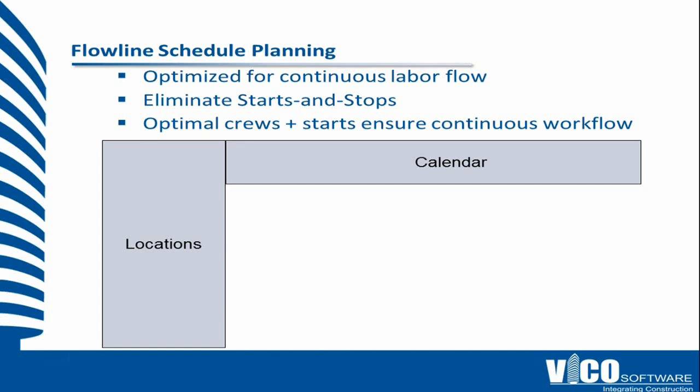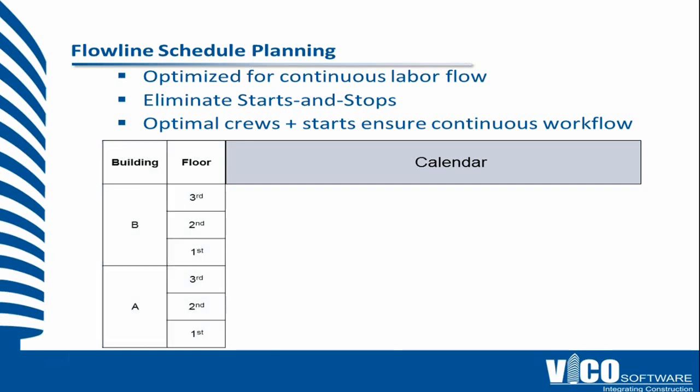This is introducing Flowline. Some of you on the line hopefully will have seen this before. This is essentially how we represent on the left-hand side in hierarchies the structure of those locations. We have Building A and Building B as the two locations, and in the floors hierarchy we have three floors for each of those buildings.